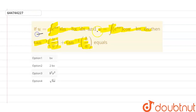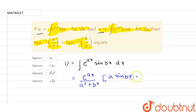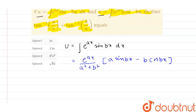We can solve u and v using integration by parts and we also have the direct formulas. Using the direct formula: u equals the integration of e raised to power ax sin(bx) dx, which equals e raised to power ax upon (a squared plus b squared), into a sin(bx) minus b cos(bx).